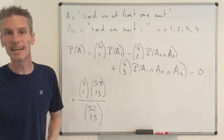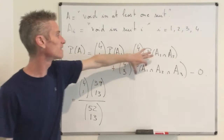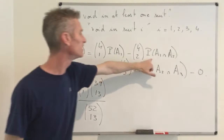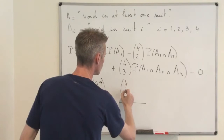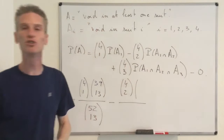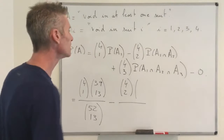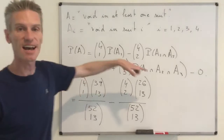For P(A1 ∩ A2), the bridge hand must be void in two suits — removing those 26 cards leaves 26 cards to choose from. So we choose 13 from 26: that's 26 choose 13 divided by 52 choose 13. This is subtracted with coefficient four choose two = 6.